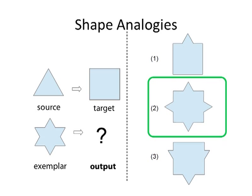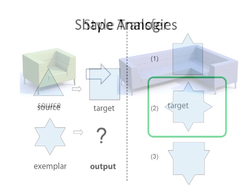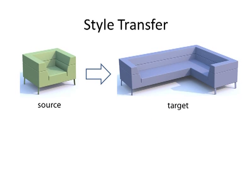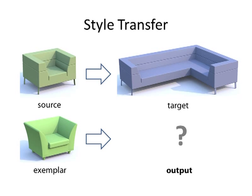We believe that the same logic that guides humans in solving these tests can be applied to solving challenging 3D style transfer problems. Here the inputs are a source and a target 3D shape in a given style, and an exemplar 3D shape in a different style.